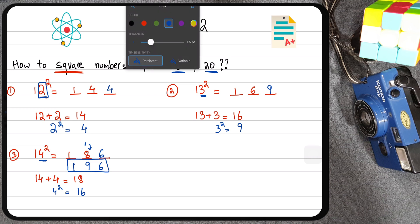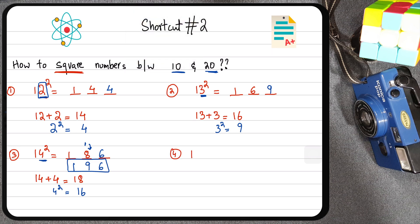Let's just try out one another example to cement this concept. Suppose you want to find out what the square of 16 is. Again, make three blanks. So now you want to find out what the first two digits are. You can do that by adding 16 and 6 together. So 16 plus 6 is 22. So we have the first two digits now, which are 2 and 2.